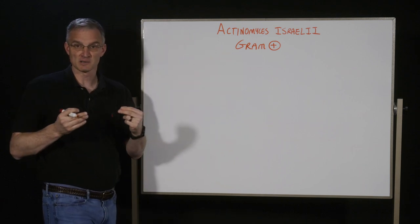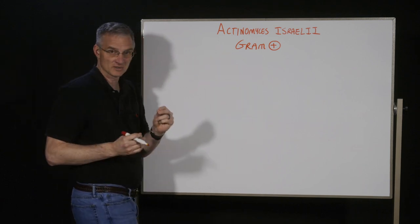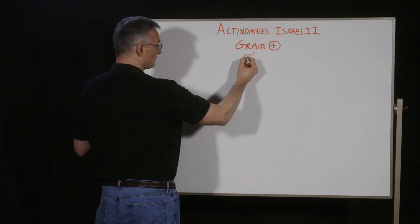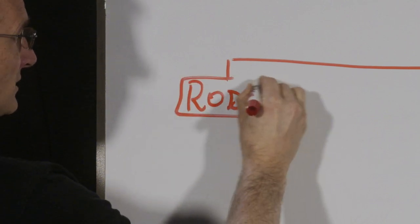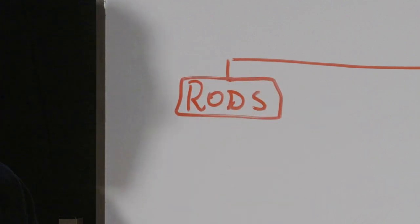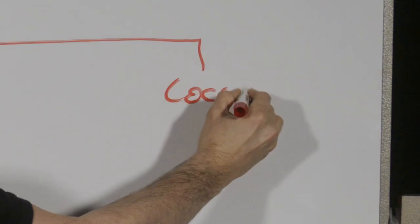Now, as you remember from your classification of your gram-positives, when the test question says it's a gram-positive, you've really got three main groups that this could possibly be going into. One is your rods. The other major one is going to be your cocci.